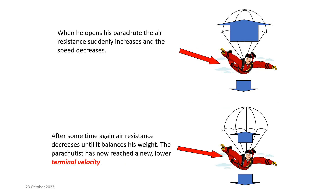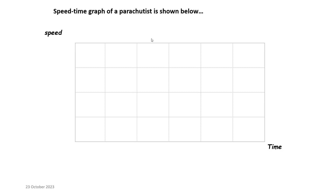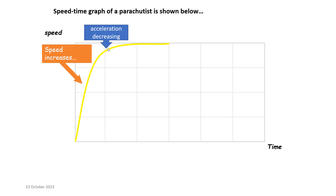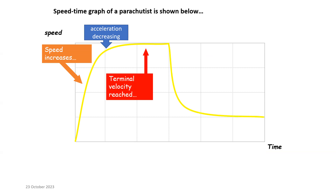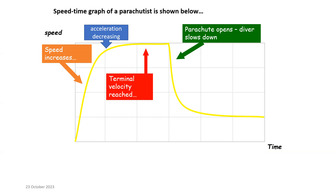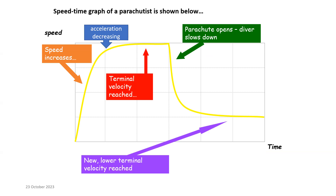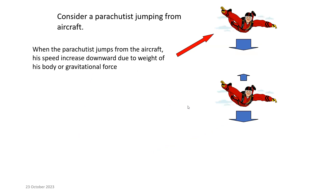As he decelerates and slows down, air resistance decreases, and eventually he will land on the ground. The advantage of using a parachute is that he reaches the ground at a low speed. On the speed-time graph: speed increases, then acceleration decreases, then terminal speed is reached; when the parachute opens he slows down to a new, lower terminal speed, and with that low terminal speed he lands. This graph is very important and you should learn the explanation for each stage.